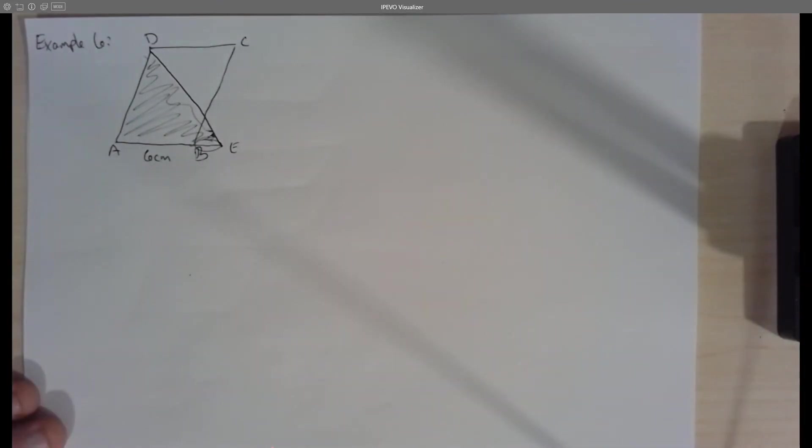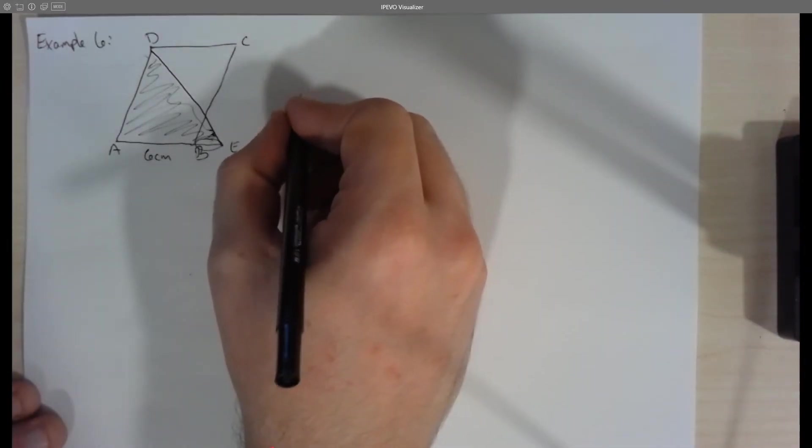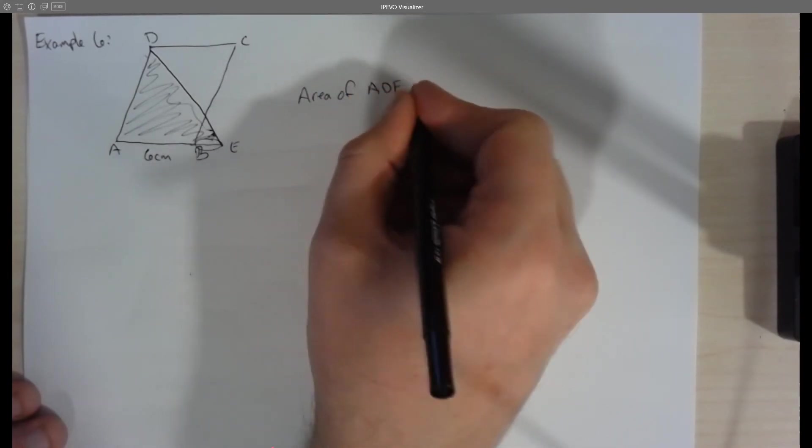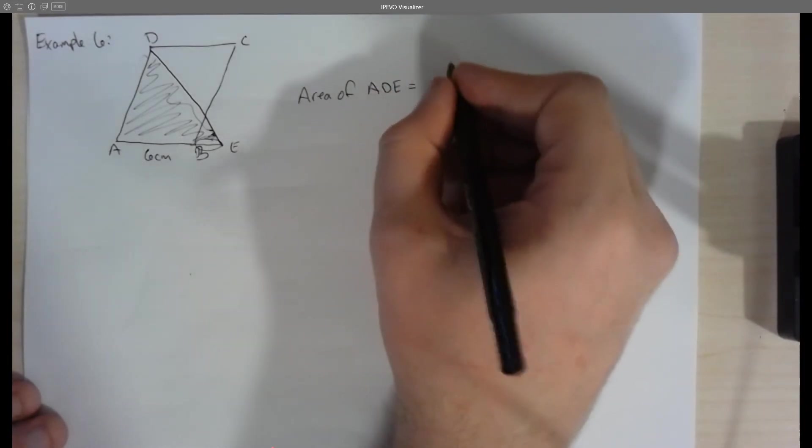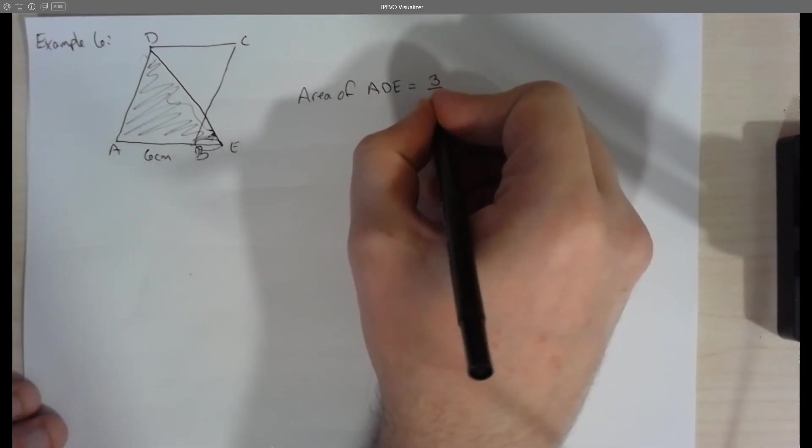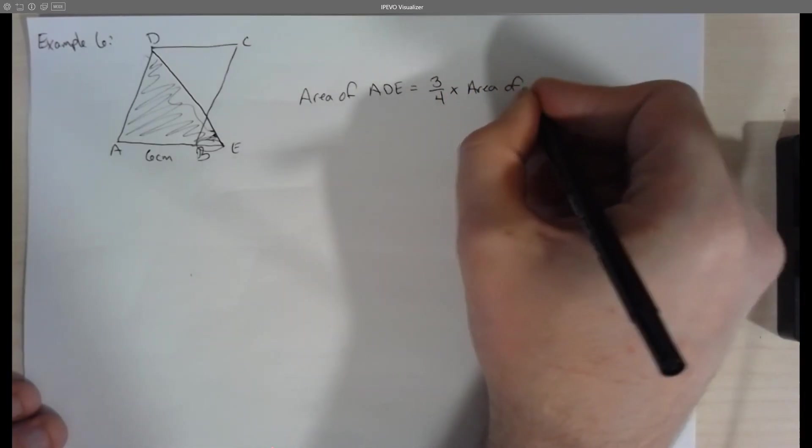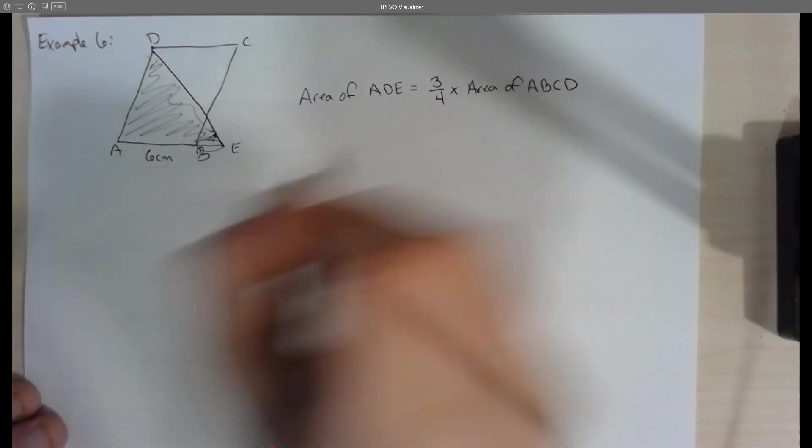So it's this little extra length that we're asked to solve for in this question. So this gets a little bit tricky here as we step through how to do this. So we know that the area of the triangle, which we're going to figure out here. So basically area of A, D, E is going to be equal to three quarters of, or times the area of A, B, C, D, the parallelogram.